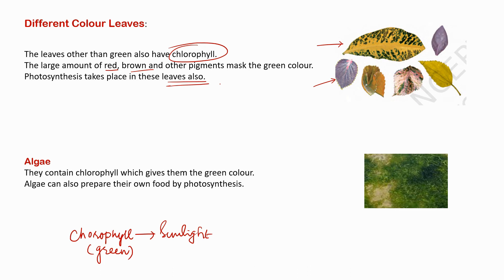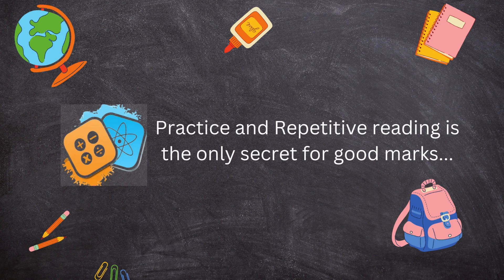Now comes algae. Algae also have chlorophyll, which gives them their green color, and they can also prepare their own food through photosynthesis. As you can see in the picture, in stagnant water where water is collected and sunlight is present, we can see green color patches — these plants are called algae.